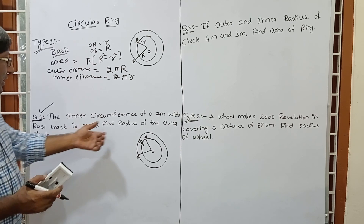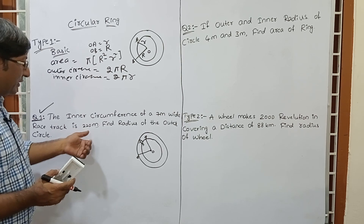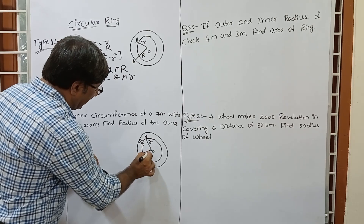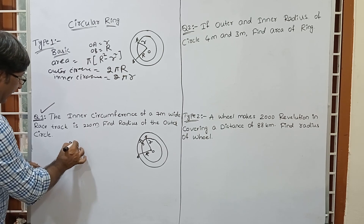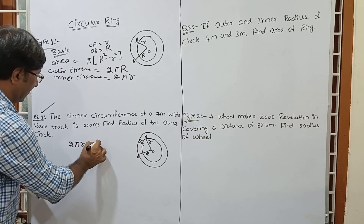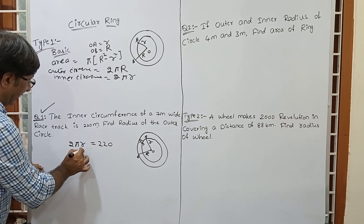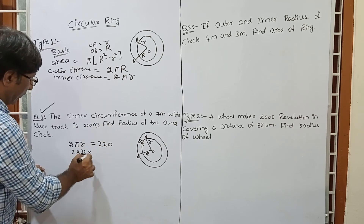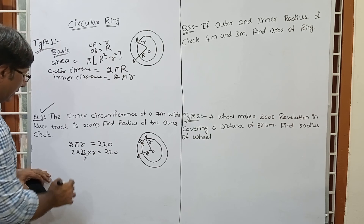The inner circumference of a 7 metre wide race track is 220 metres. Suppose inner radius is r and outer radius is R. Inner circumference is 2 pi r, which equals 220 metres. We know pi is 22 by 7, so 2 into 22 by 7 into r equals 220.